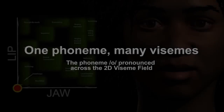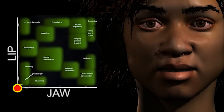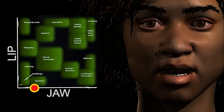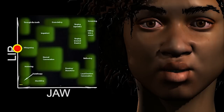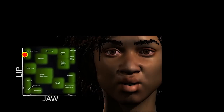JALI is based on a universal feature of human speech: that any given phoneme can be spoken with a wide variety of visemes defined by two axes. One, the use of the speaker's jaw only — the jaw axis — and two, the speaker's facial muscles only — the lip axis. And when we speak, we use arbitrary combinations of jaw and lip.